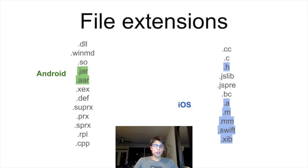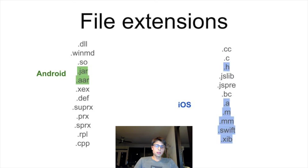For Android, those are jar and aar libraries. Jar is basically a collection of compiled Java classes, whereas aar is a collection of compiled Java classes packaged with Android resources, Android manifest files, and so on.